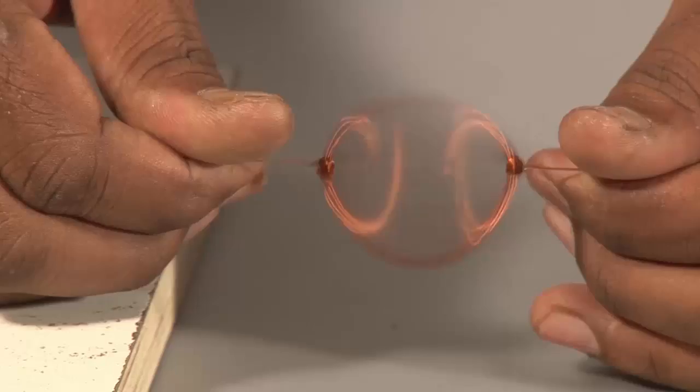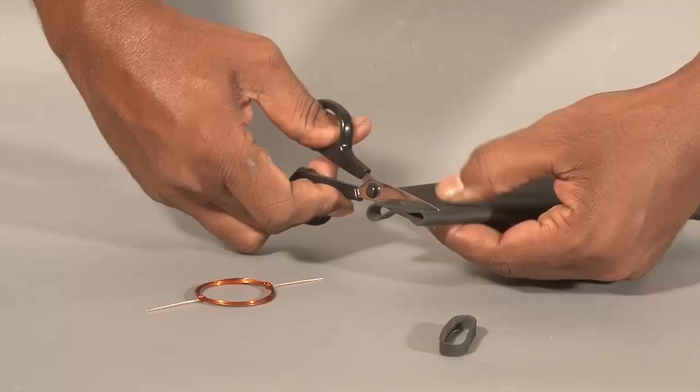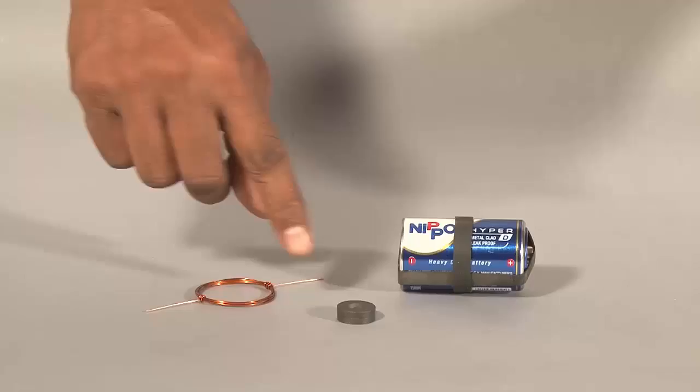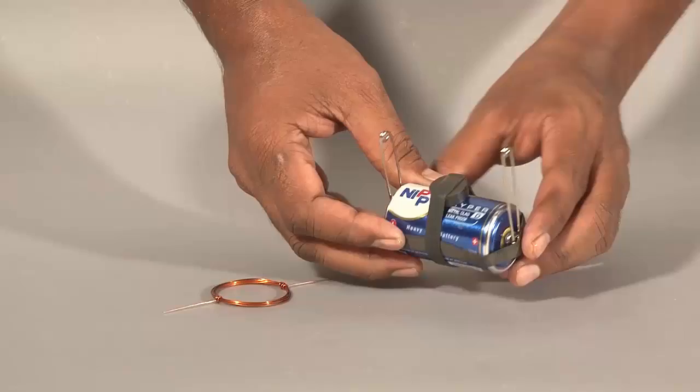The coil is ready now. Next, take an old bicycle tube and use it to make two broad rubber bands. Now stretch and fix these rubber bands on the battery and tuck in the magnet and the safety pins.